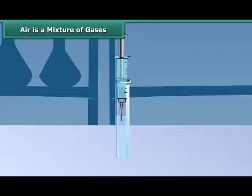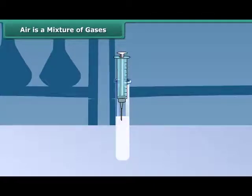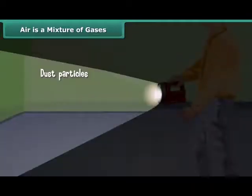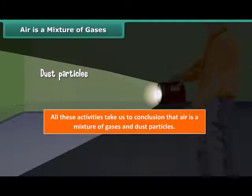Now take lime water in a test tube. With a syringe, blow some air through this solution. You can see that lime water turns milky. This indicates the presence of carbon dioxide in air. Put your torch light on while walking through a dark place. You will see tiny shining particles moving in the beam of torch light. These are the dust particles present in air. All these activities bring us to the conclusion that air is a mixture of gases and dust particles.